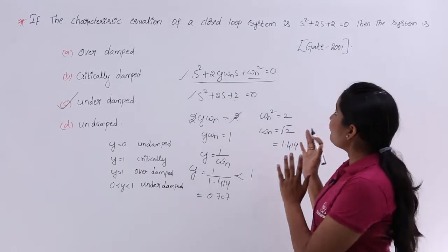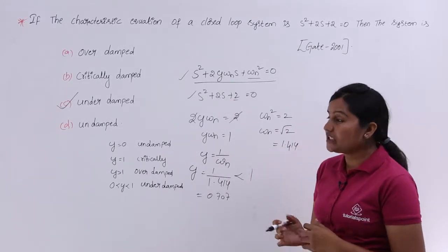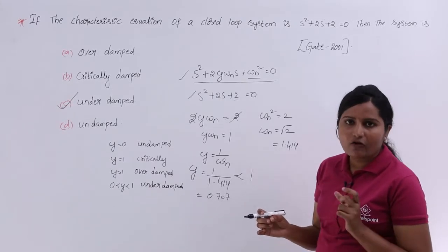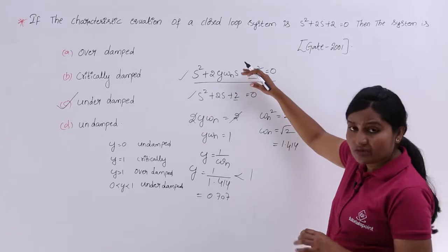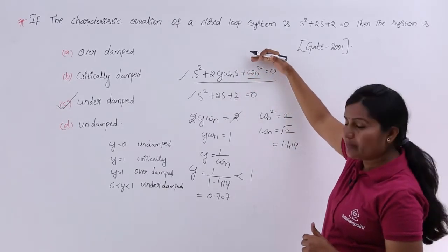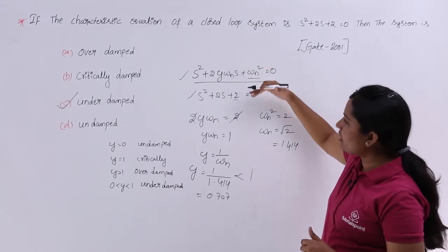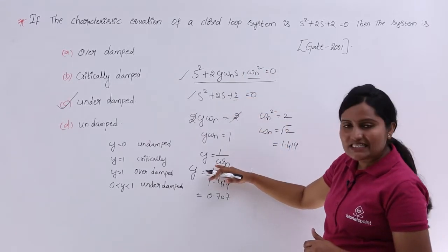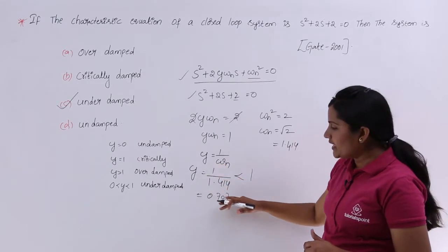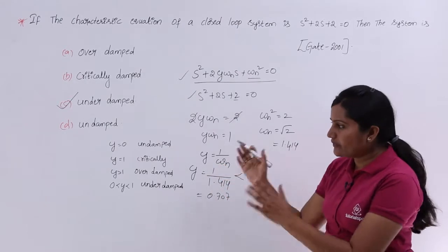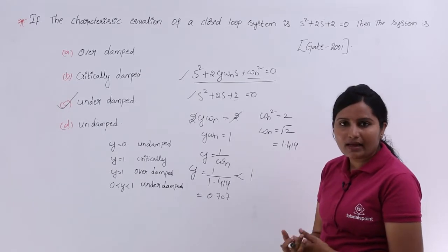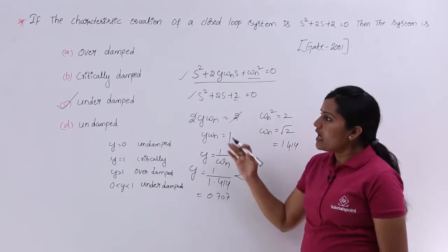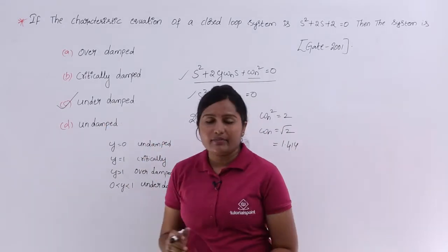What we need to do is: if they give a characteristic equation, we need to take the characteristic equation or denominator of the system transfer function and compare it with the standard form. After comparing, we get the zeta value, and the zeta value itself defines which type of damping the system has. According to our data, our system is an under-damped system.